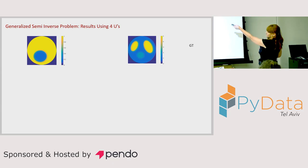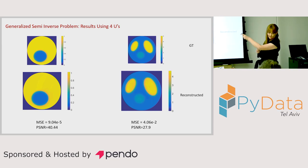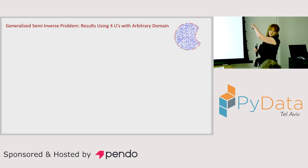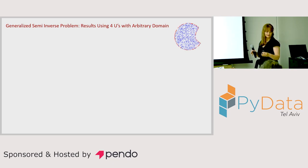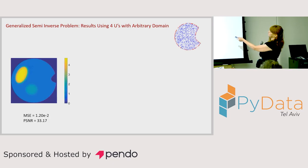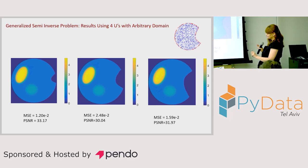The results show good MSE and PSNR in both cases. We also demonstrate with an arbitrary domain — we said we're not restricted to classical geometries, and the software is invariant to shape. The inverse problem on an arbitrary domain works exactly the same, with nothing changed in the software.